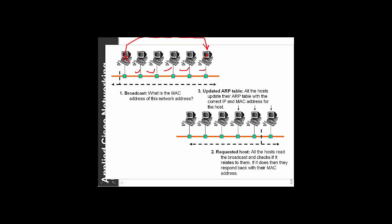When the destination node detects that it is its IP address, it returns back only to the requesting node its MAC address. When that happens, the ARP table on the host that asked for the MAC address will update its ARP table. In this way, we can dynamically add and delete computers from the network. After a while, the address mapping is aged out of the ARP cache and the host must re-ask for it. So if a node goes offline, it will need to be requested again.